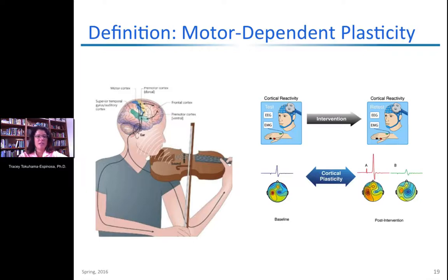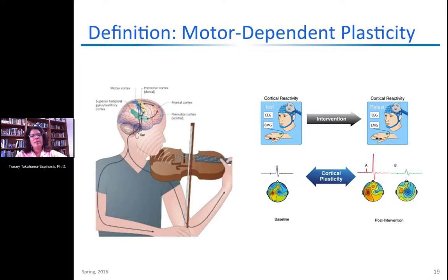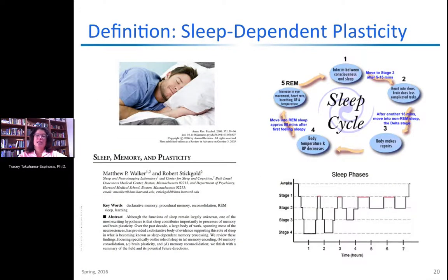An example of motor-dependent plasticity is learning to play the violin. You have a stimulus, your brain sends signals, and based on the level of practice, certain brain areas are continuously strengthened. There are classic studies of spatial learning and spatial orientation in which we can measure these changes in many ways, including TMS — transcranial magnetic stimulation — to measure changes in the motor cortex based on new learning.